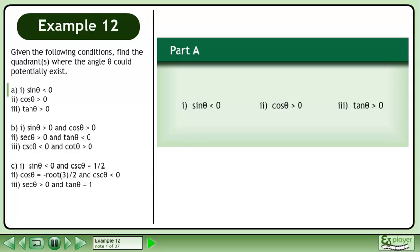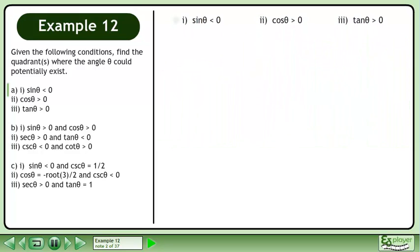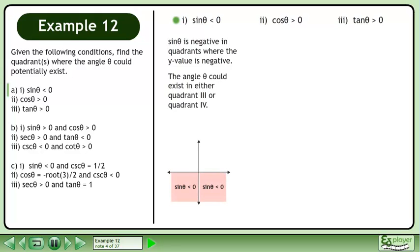Given the following conditions, find the quadrants where the angle θ could potentially exist. We'll begin with part 1. Sinθ is negative in quadrants where the y value is negative. The angle θ could exist in either quadrant 3 or quadrant 4.